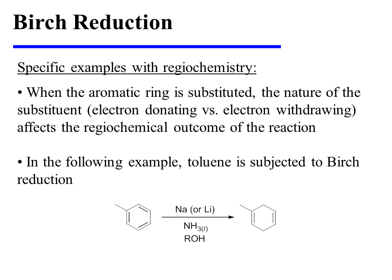Now let's turn our attention to some specific examples with regiochemical concerns. When the aromatic ring is substituted, the nature of the substituent — whether it is electron donating or withdrawing — affects the regiochemical outcome of the reaction. For instance, toluene can be subjected to Birch reduction to yield a 1,4-cyclohexadiene in which the methyl group resides on one of the sp2-hybridized carbons of the product.